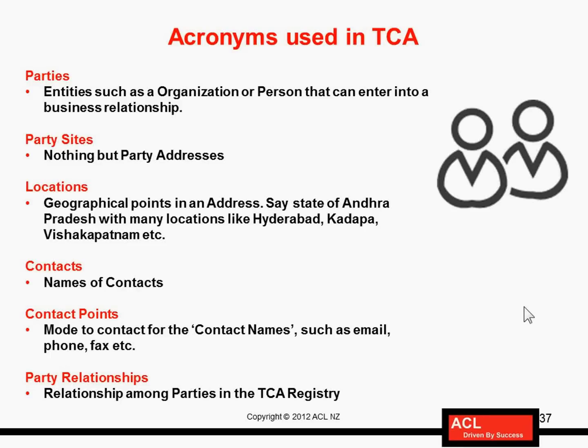In Trading Community Architecture (TCA), each trading partner is identified by an acronym called a 'party.' Parties are entities such as an organization or a person that can enter into a business relationship. Organizations could be customers or suppliers, while a person could be a contractor or an employee. For instance, an employee can be defined as a supplier in Oracle — in that case, the party type is a person, not an organization.